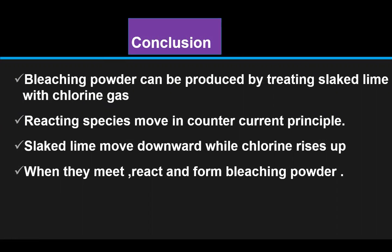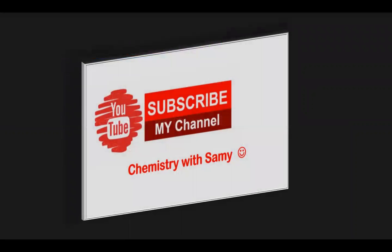In conclusion, today's lecture covered the preparation of bleaching powder. The two reacting species are slaked lime and chlorine gas. They move by the counter-current principle: slaked lime moves downward while chlorine gas rises up. When they meet, they react and form bleaching powder. Thank you.